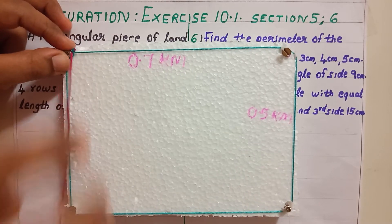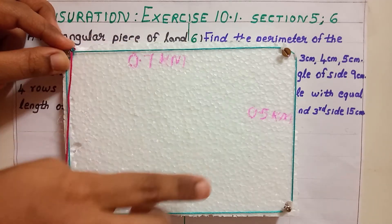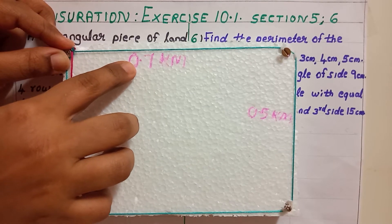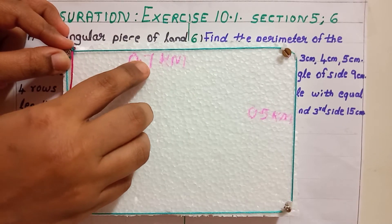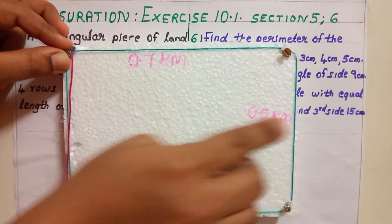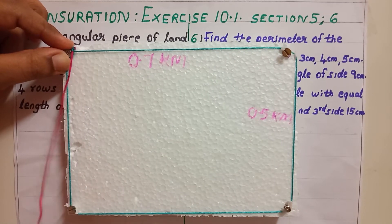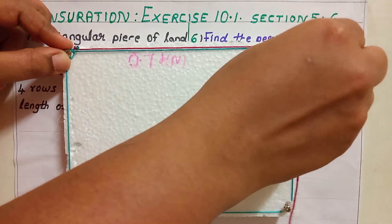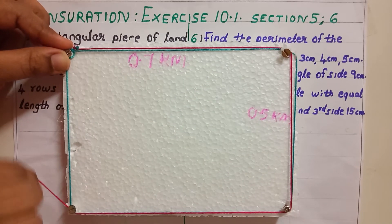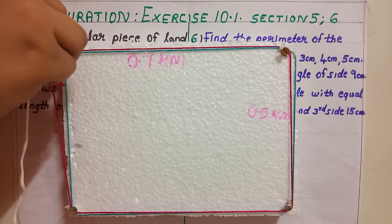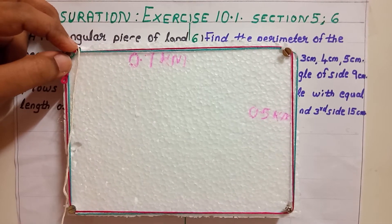So the length of this thread, the blue color thread will be 2 into L plus B. That means 2 into 0.7 plus 0.5 will give you the length of blue color thread. Then again, one more round, second round. Now, the pink thread is over. Second round is over.